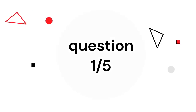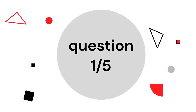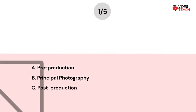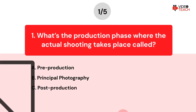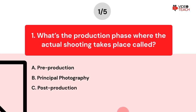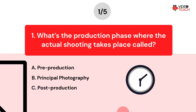Question number one. What's the production phase where the actual shooting takes place called? Option A: Pre-production. Option B: Principal photography. Option C: Post-production. Now you have about 15 seconds to think about your answer.